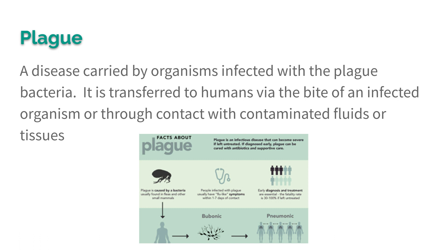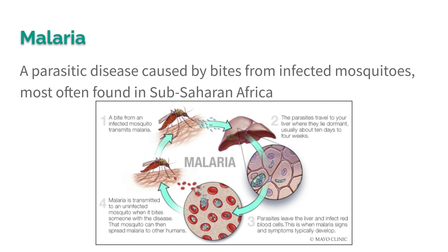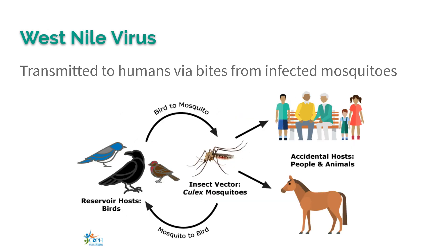Plague is still around, though not as common. It is transferred to humans via the bite of an infected organism — something with a flea on it — or through contact with contaminated fluids or tissues. Tuberculosis is a bacterial infection spread by breathing in the bodily fluids of an infected person, such as through sneezing or coughing nearby. Malaria and West Nile virus are both mosquito-borne.